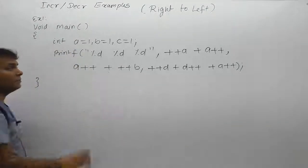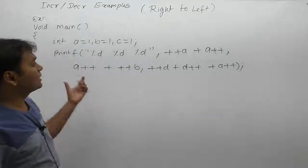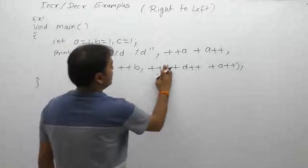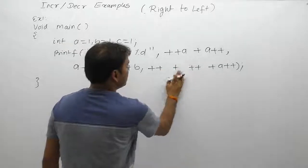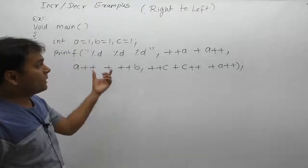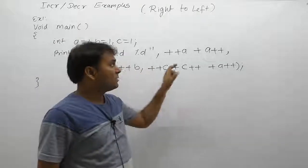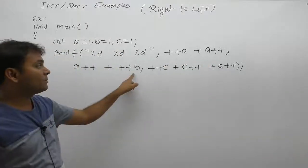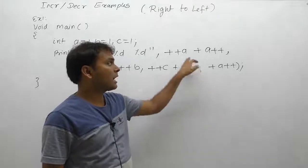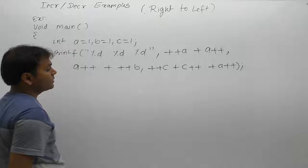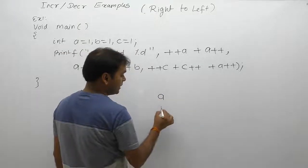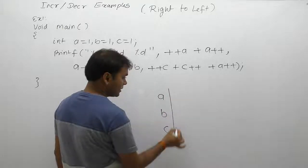The next example uses a combination of print statements with different variables. Here we are using three variables — a, b, and c — in place of d. There are three variables a, b, and c, and memory allocation is done for all three.